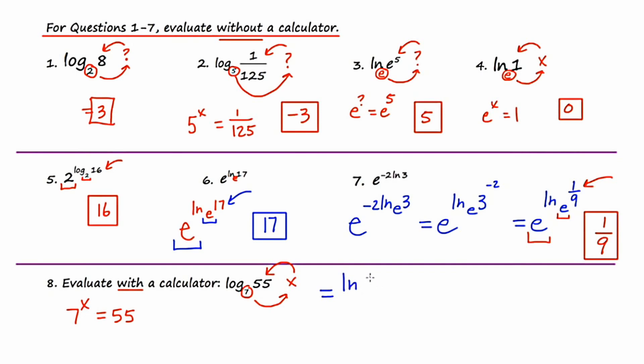Remember that the base of seven goes in the basement. So it's the natural log of fifty five over the natural log of seven. If I grab my calculator, the natural log of fifty five divided by the natural log of seven, I end up getting two point zero five nine. Remember on the AP, three decimal places either rounded or truncated. Great job. Let's go on to slide number four.